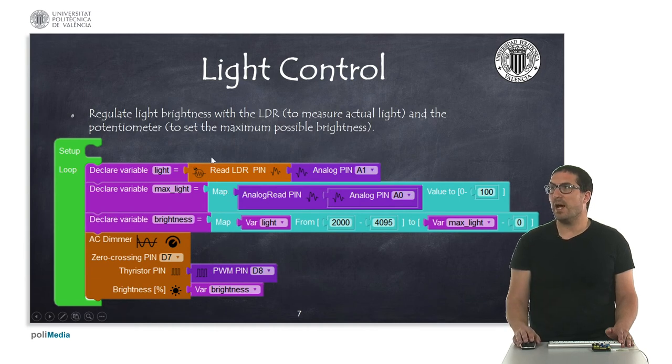And this is the actual measurement light, so the brightness indeed will be the light we measure, a value between 2, in this case, for instance, 2,000 and 4,095, this will be mapped onto the maximum allowed light and 0.